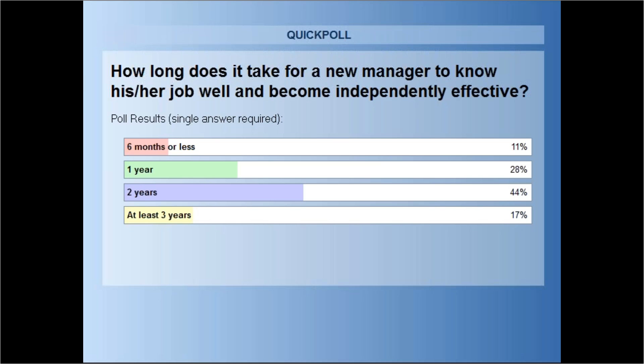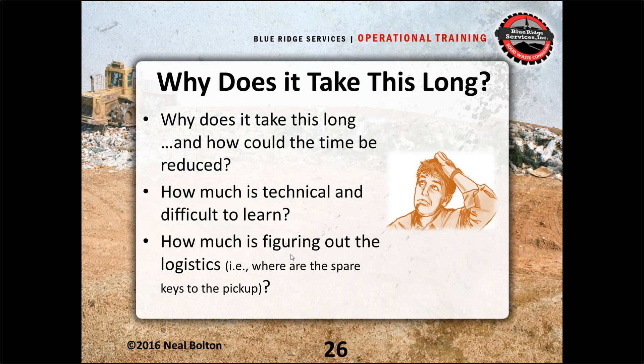Poll results show about 40% say a year or less, and about 60% say two years or more. So why does it take so long? Some of it is technical — management skills, engineering skills, financial skills. And some of it is just figuring out the logistics: where are the spare keys to the pickup, where do I get those forms, who do I call if I have a question about equipment repairs. Some is technical and some is just figuring out how the system works.